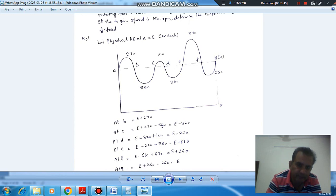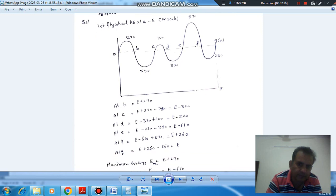So at point A, the energy is E. At point B, the energy is E plus 270 according to area. The energy is in terms of area. Now at point C, we have to subtract this much energy, so that is E minus 390. At point B it will be 100 added, so it will be E minus 290.